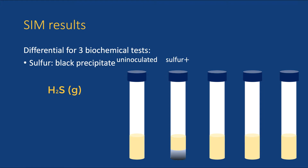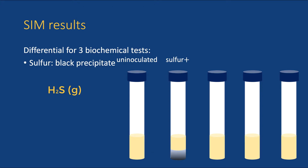The hydrogen sulfide reacts with iron in the medium, which forms a black solid. In chemistry, this is called a precipitate — a solid that settles on the bottom of the tube. If you see a black precipitate in the tube, the bacteria can reduce sulfur. This is reported as sulfur positive. If there is no black precipitate, the bacteria are sulfur negative.